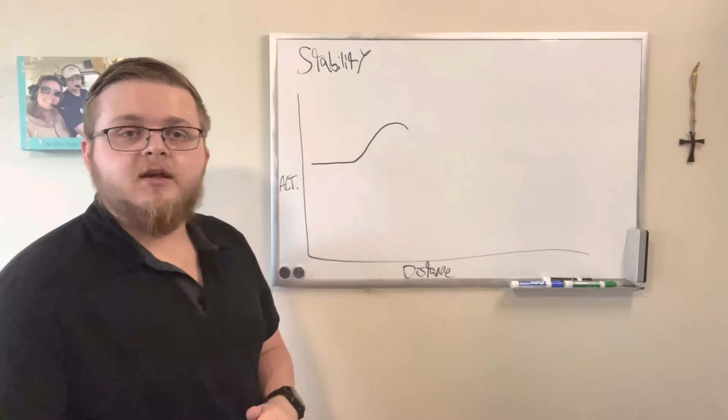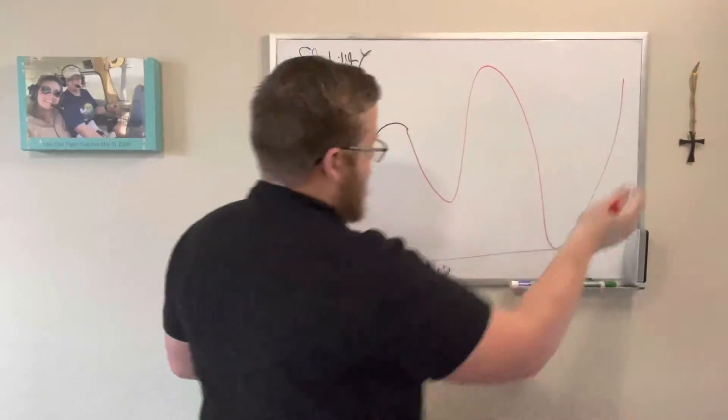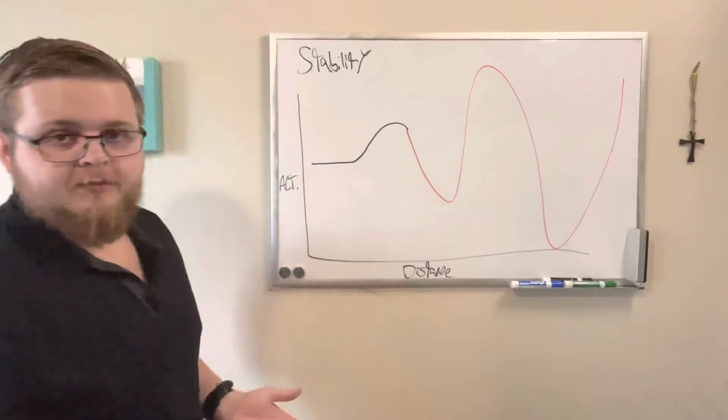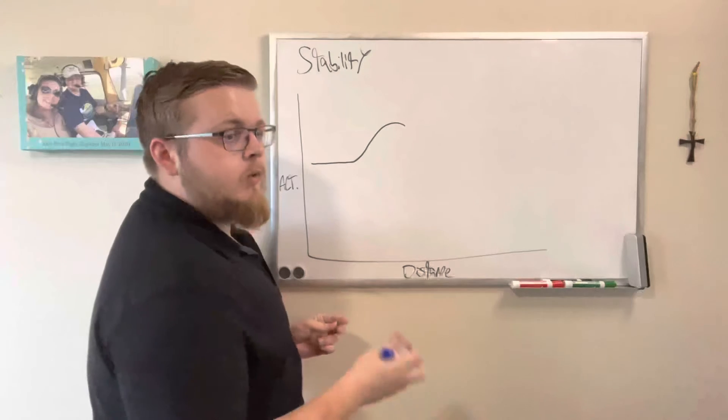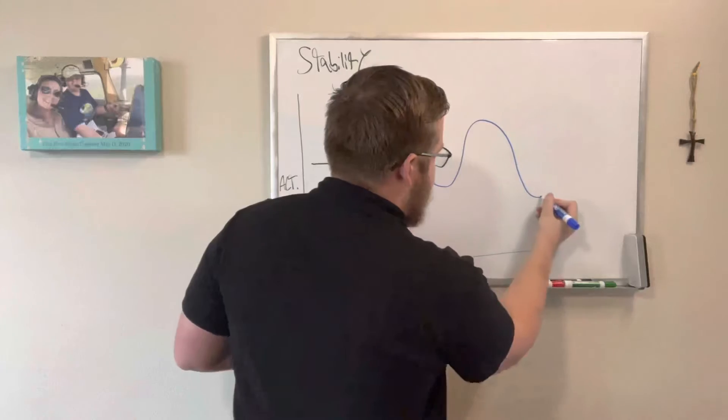Negative dynamic stability would now involve our flight path getting farther away from its original position until it's just way off of what it was before. Neutral dynamic stability would be when the oscillations remain the same and don't really change, so it's not getting worse, it's not getting better.